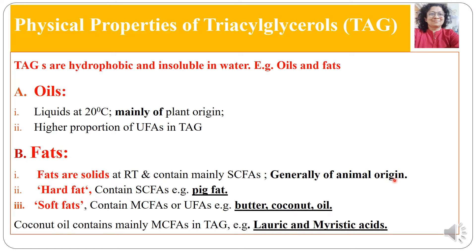Fats are generally of animal origin. Hard fat contains short chain fatty acids — example: pig fat. Soft fat contains medium chain or unsaturated fatty acids — examples include butter and coconut oil. Coconut oil contains mainly medium chain fatty acids in triacylglycerol, such as lauric and myristic acids. In summary, oils are liquids and fats are solids at room temperature; fats can be hard fat or soft fat.